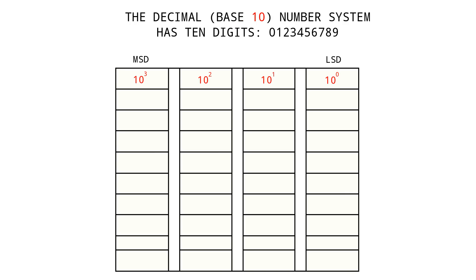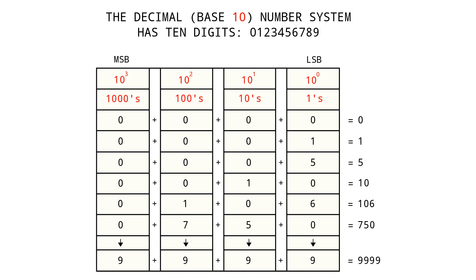We look at the very familiar decimal number system: 10 to the zero, 10 to the one, 10 to the two, and 10 to the three. We have the ones column, the tens column, the hundreds column, and the thousands column. This is straightforward — everybody's grown up being able to do this type of mathematics. A one in the ones column is one; one in the tens column is ten; one in the hundreds column and a six in the ones column gives us 106; and so on, all the way up to nine thousand nine hundred and ninety-nine.